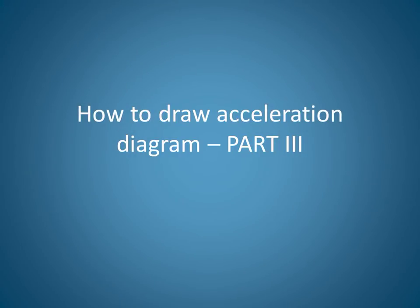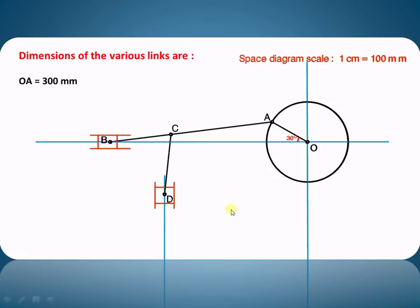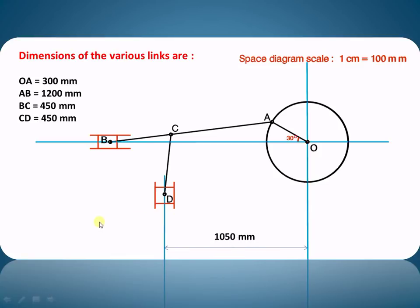Let us start to understand how to draw the acceleration diagram in case of some complex mechanism. As shown here, we have a mechanism with two sliders B and T. The various dimensions of the links are: OA = 300 mm, connecting rod AB = 1200 mm, BC = 450 mm, CD = 450 mm, and this particular distance is 1050 mm.